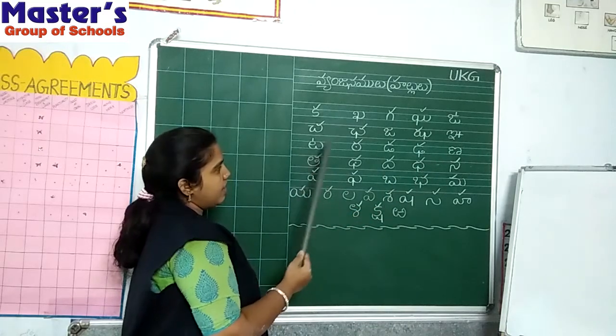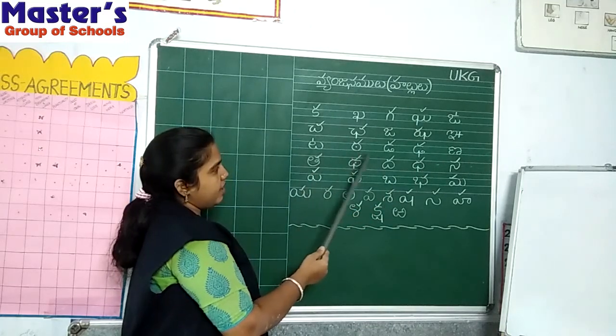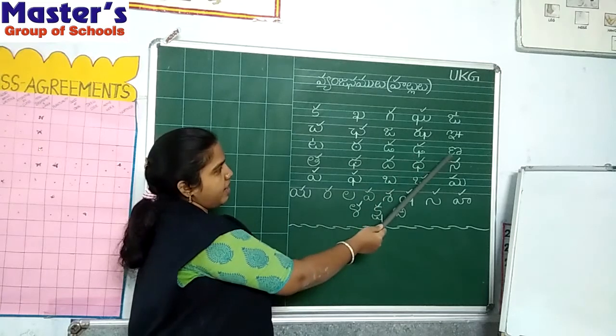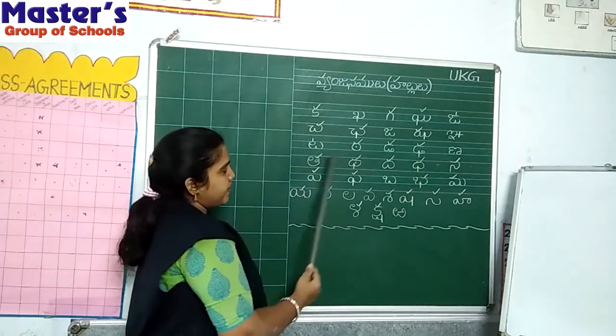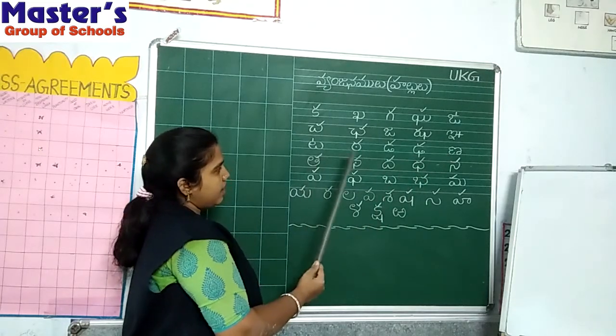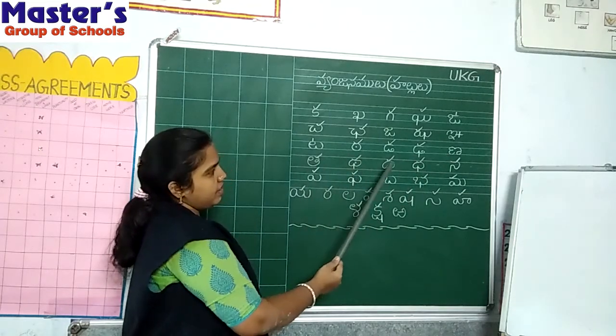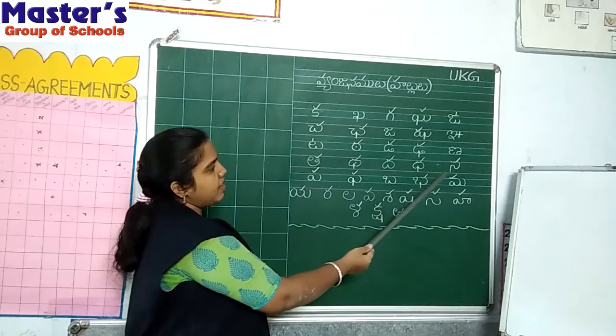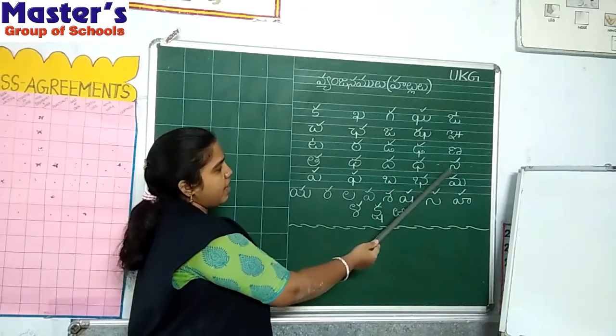Ta, Tha, Da, Dha, Ana, Ta, Tha, Da, Dha, Na.